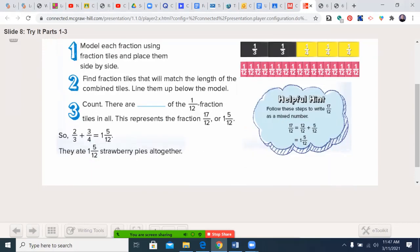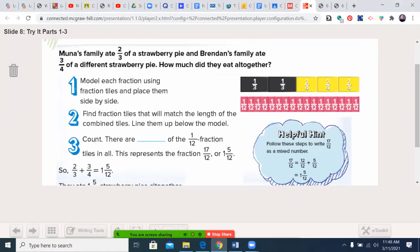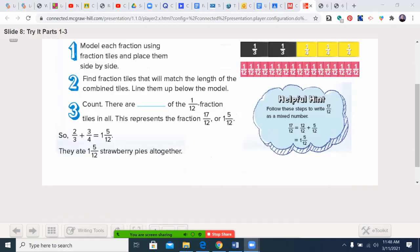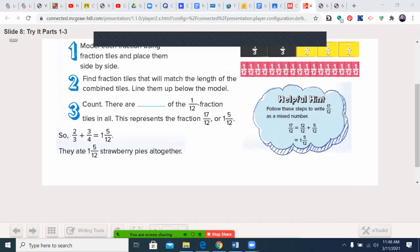So step one was model each fraction using fraction tiles and place them side-by-side. Here's that. Now find fraction tiles that will match the length of the combined tiles. So one of the things I would recommend here is that you look for the least common multiple of three and four. In that case, it's 12. So now I'm going to count this. There we go.